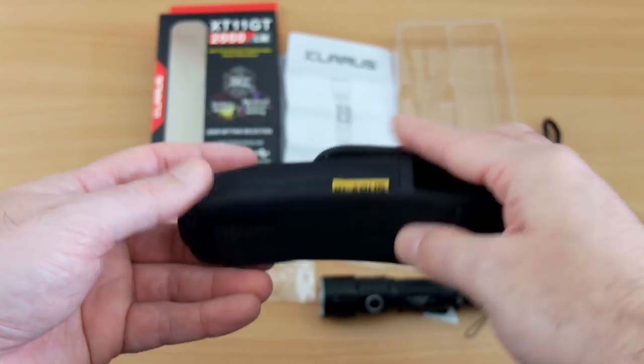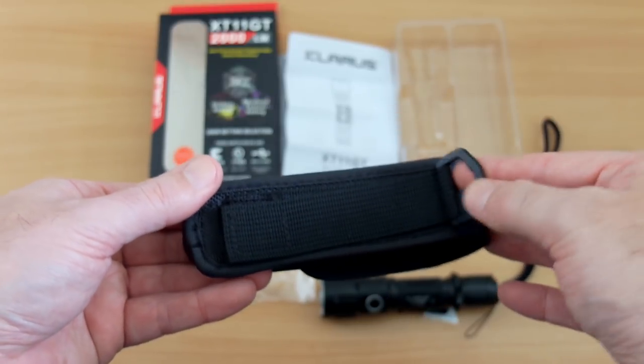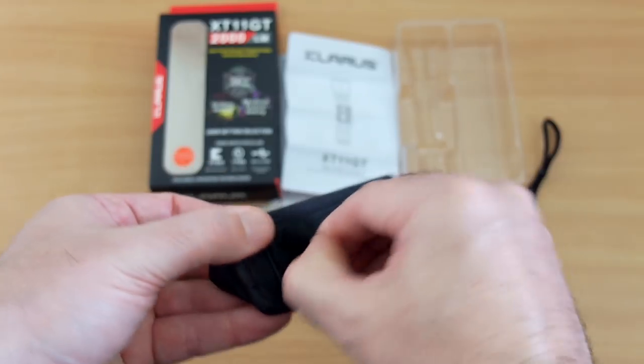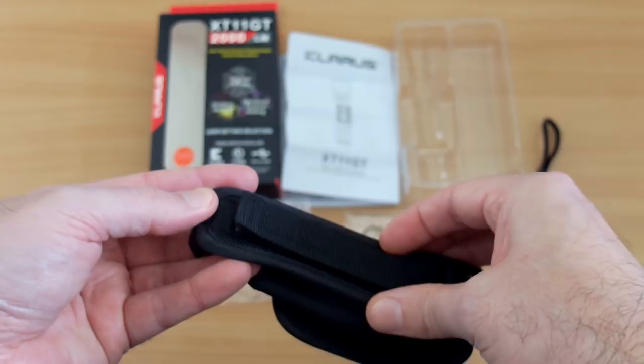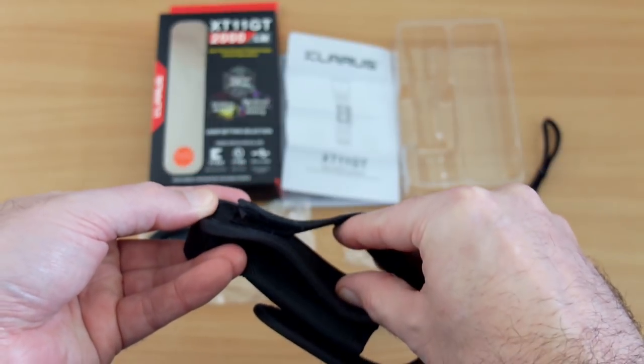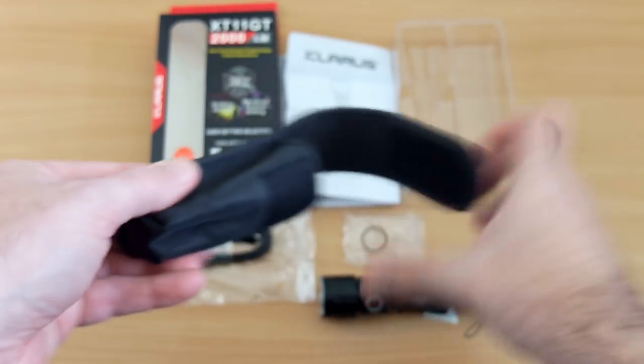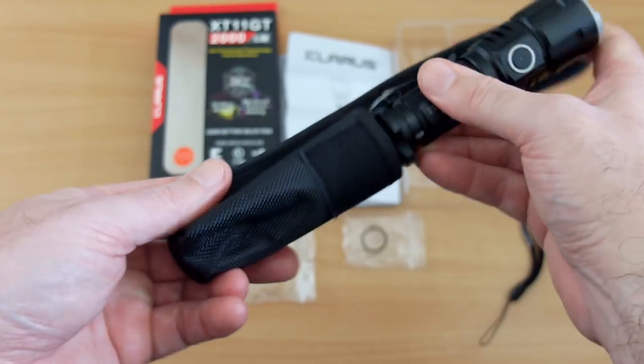D-ring on the back and we have a velcro fastening as well as a belt loop that's sewn into it too. Quite a nice case and as you'd expect it fits the torch perfectly.